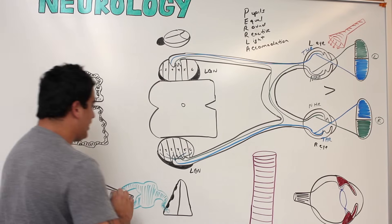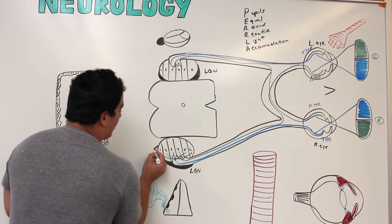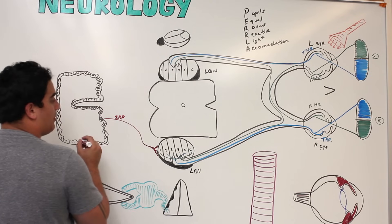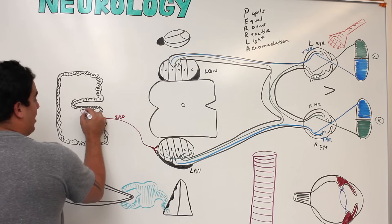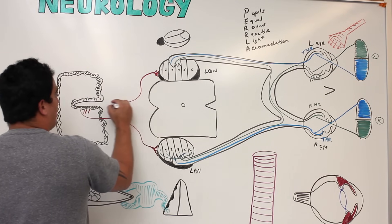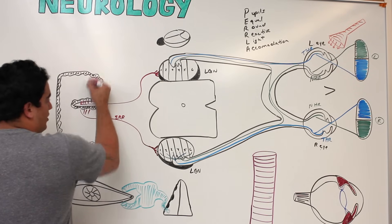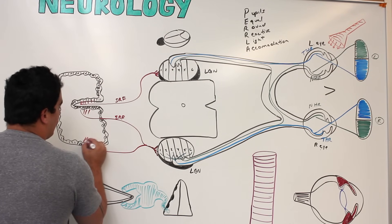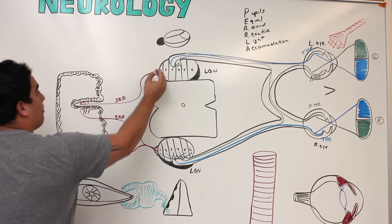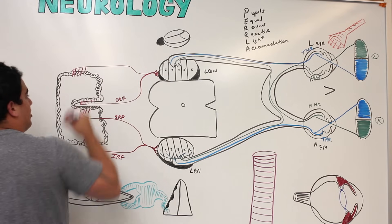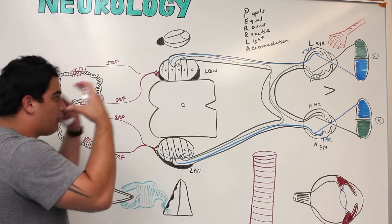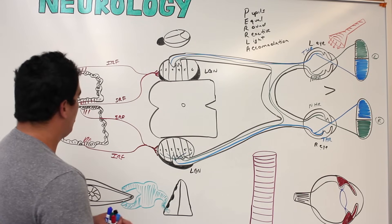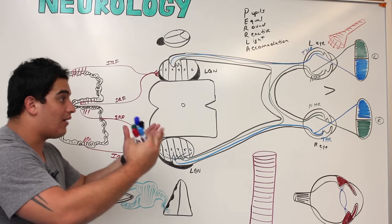Out of the lateral geniculate nucleus, information travels via the superior retinal fibers (Barrón's loop) through the parietal lobe, and via inferior fibers (Meyer's loop) through the temporal lobe — both heading to the striate cortex of the occipital lobe, where visual sensation becomes conscious perception.